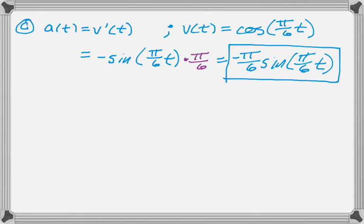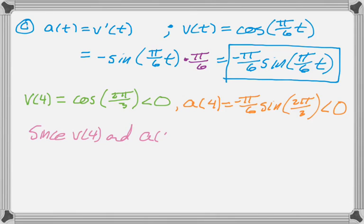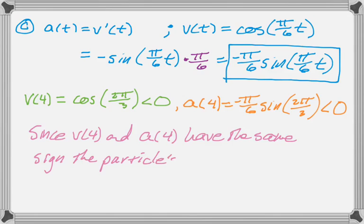The question continues: is the speed of the particle increasing, decreasing, or neither at t = 4? I need to check the sign of velocity and acceleration. v(4) = cos(4π/6) = cos(2π/3). Since 2π/3 is in the second quadrant and cosine is negative there, v(4) < 0. For acceleration: a(4) = −(π/6)sin(2π/3). Since 2π/3 is in the second quadrant, sine is positive, so overall a(4) is negative. Since v(4) and a(4) have the same sign, the speed is increasing — any time velocity and acceleration have the same sign, speed is increasing.